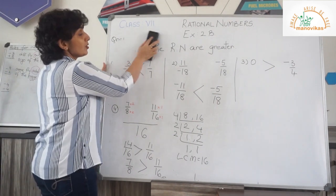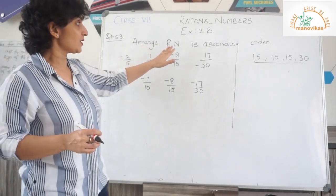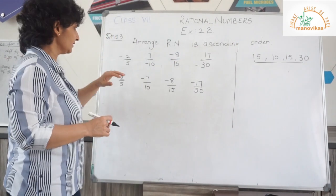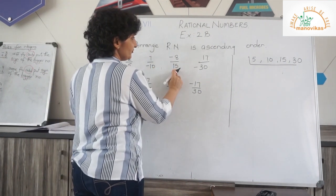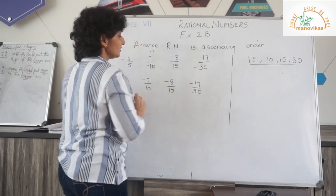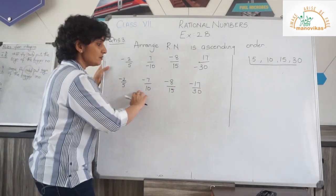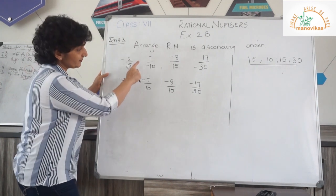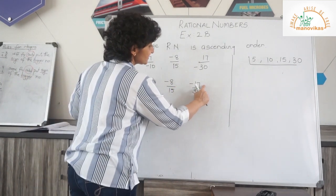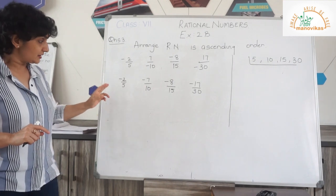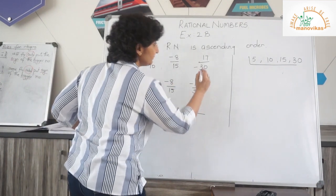We will next go to ascending order. Let's start with question 3: arrange rational numbers in ascending order. The question was minus 2 upon 5, 7 upon minus 10, minus 8 upon 15, and 17 upon minus 13. If you see here, our denominators have negative numbers, so let's make them all positive. So I have minus 2 upon 5, minus 7 upon 10, minus 8 upon 15, and minus 17 upon 13. Since the denominators are different, I need to find the LCM.